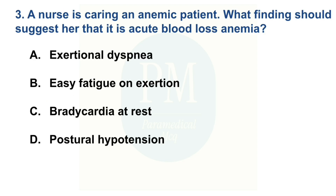A nurse is caring for an anemic patient. What findings should suggest that it is acute blood loss anemia? Option A: exertional dyspnea. Option B: easy fatigue on exertion. Option C: bradycardia at rest. Option D: postural hypotension. The correct option is Option D: postural hypotension.